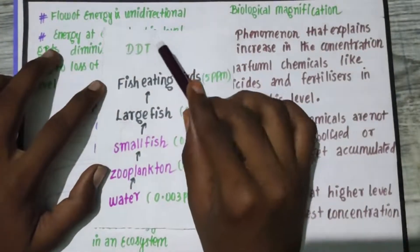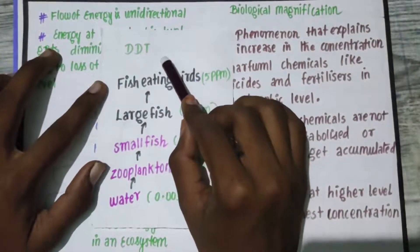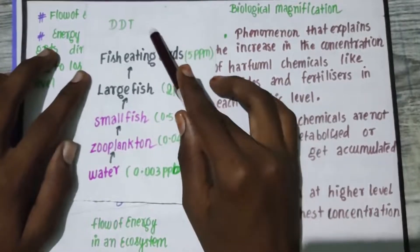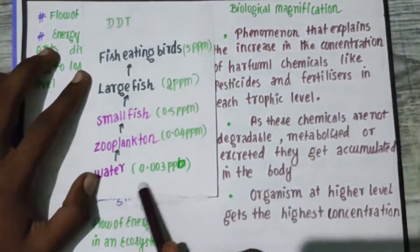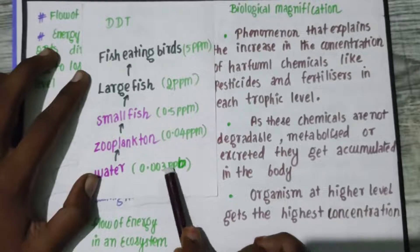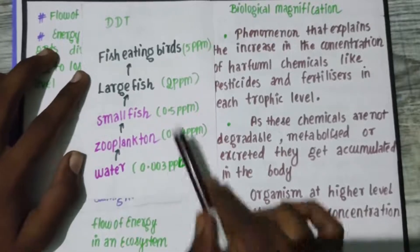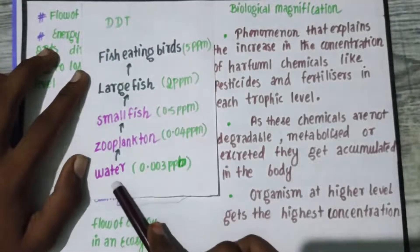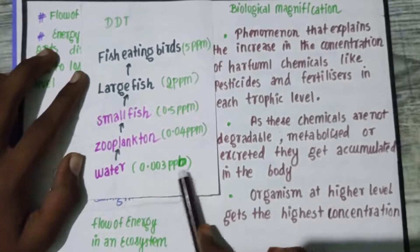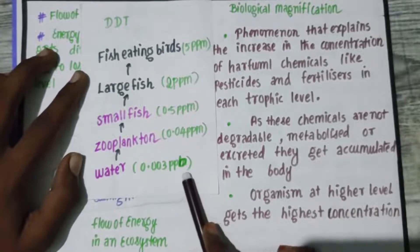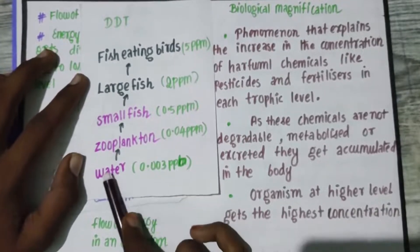DDT — Dichloro Diphenyl Trichloroethane — is an insecticide. This insecticide reaches a water source such as a pond or lake. The concentration of DDT in the water is 0.003 parts per billion.